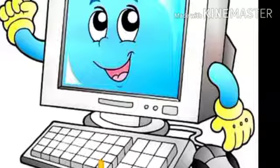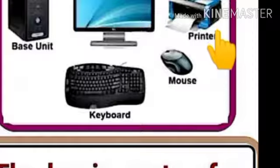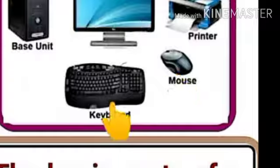Like us, computer has different parts that help in its working. Let us know about different parts of computer. The basic parts of a computer system are Monitor, Printer, CPU, Mouse, Keyboard.